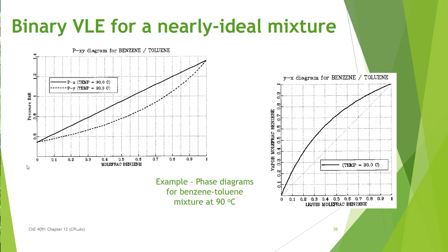And real mixtures actually do behave nearly ideally. So, benzene toluene is one of those nearly ideal solutions. And the PXY and XY diagram for benzene and toluene are shown on the screen at 90 degrees C.